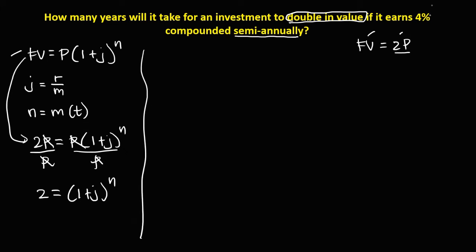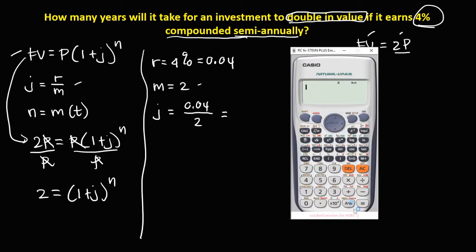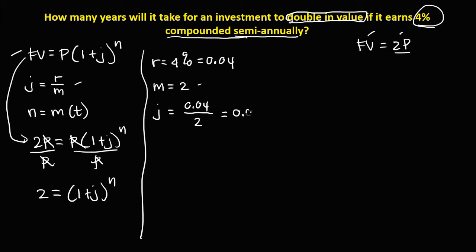From the problem, the rate is 4%, which converts to 0.04. Since it's compounded semi-annually, the compounding period is 2. So J equals the rate divided by the compounding period: 0.04 divided by 2, which gives J equals 0.02.